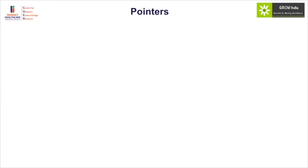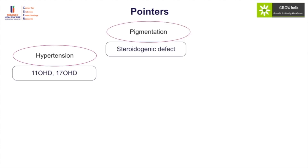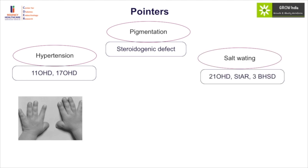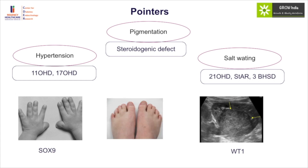Identification of specific disease pointers is important: hypertension in the setting of 11 or 17-hydroxylase deficiency, pigmentation and cytogenic pathway defects, salt wasting in the setting of 21-hydroxylase and other forms of CAH. Skeletal dysplasia should point to the possibility of SOX9 defect, while a renal mass should raise the possibility of Wilms tumor. Syndactyly is an important pointer toward Smith-Lemli-Opitz syndrome.